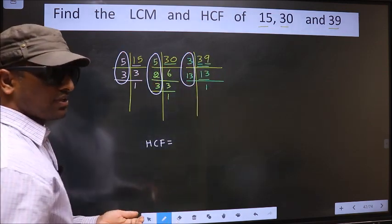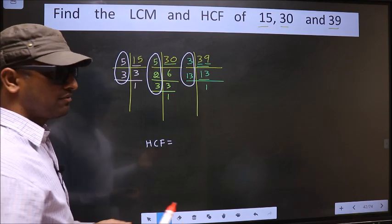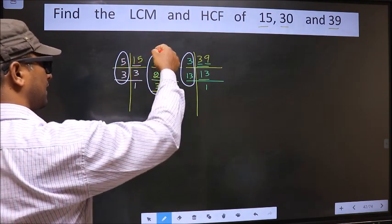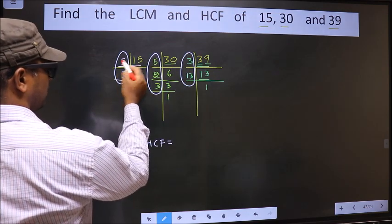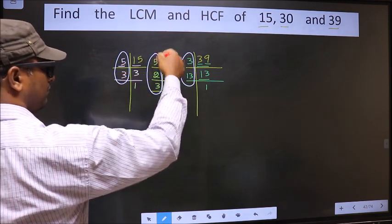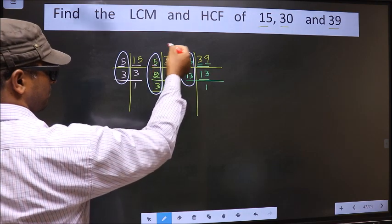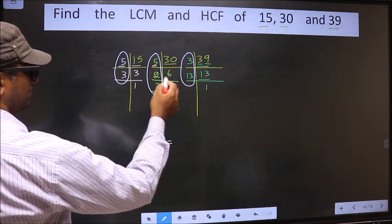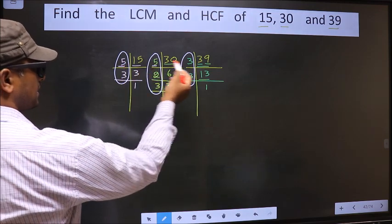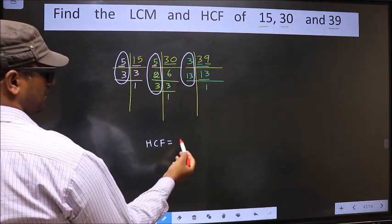So now let us find the numbers which are present here and here and also here. Starting with the number 5, do we have 5 here? Yes. Next place, do we have 5 here? No. Since 5 is not present in all the 3 places, we cannot write here.